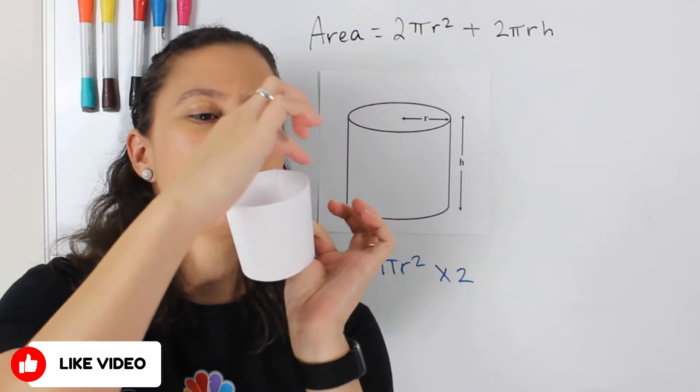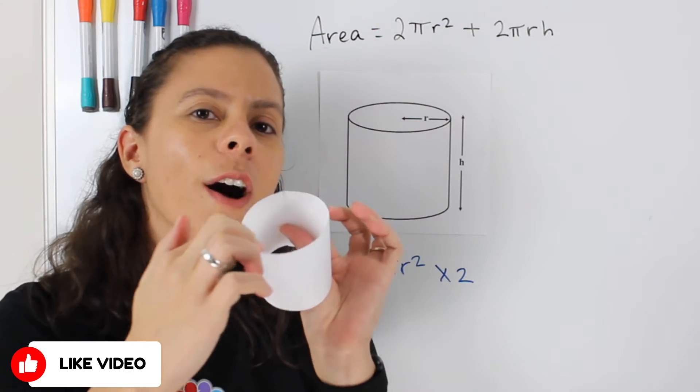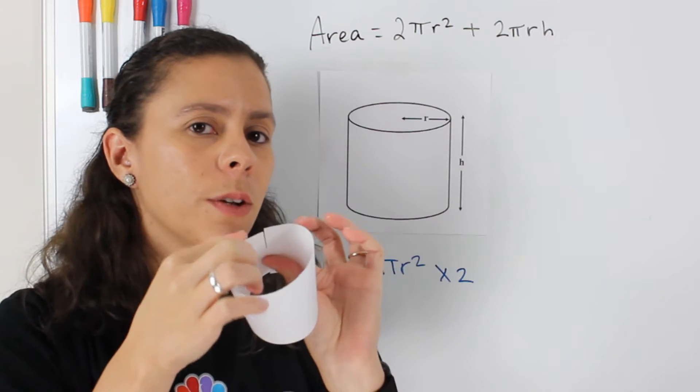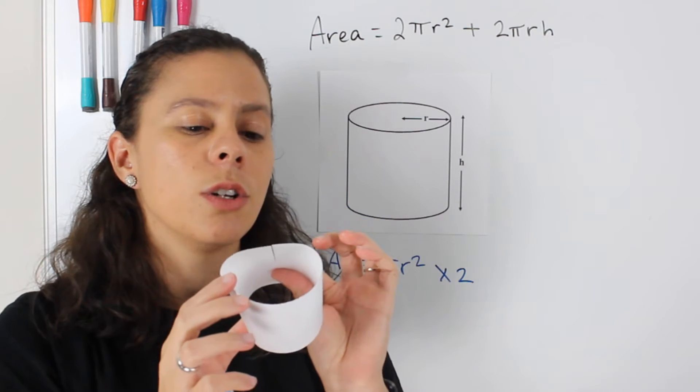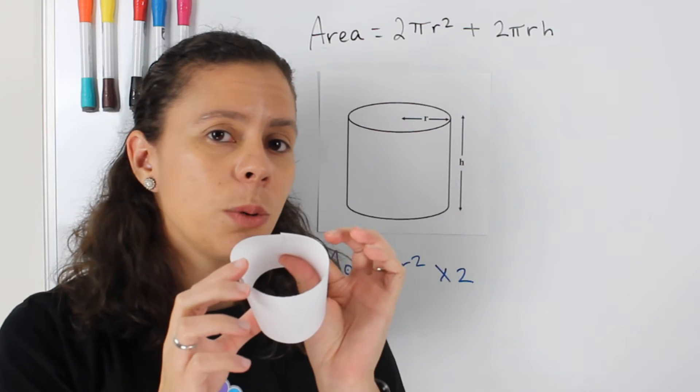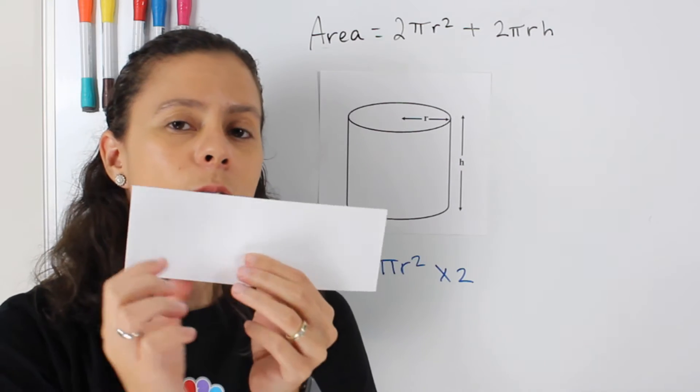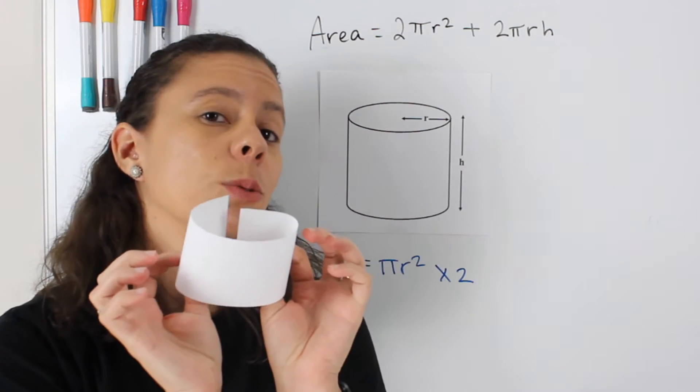but the length of it, the base, this part right here, is going to actually be the circumference of that circle. So if you know what the formula for the circumference is, which is 2 pi r, that is what we would use for the length of the rectangle that the lateral side of the cylinder will form.